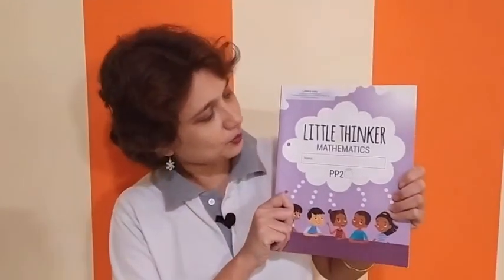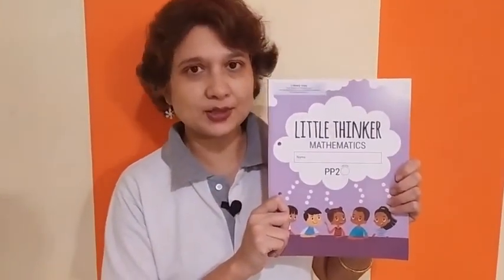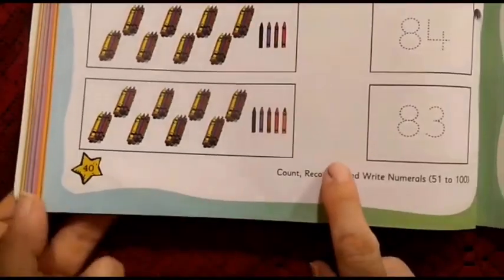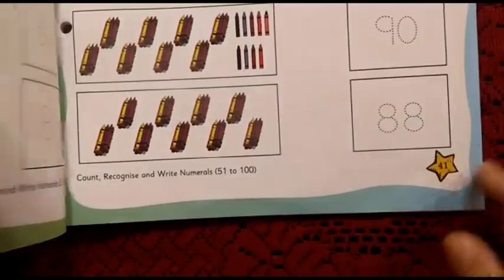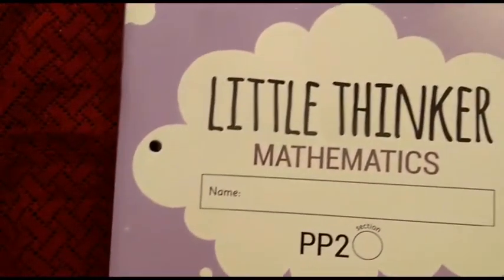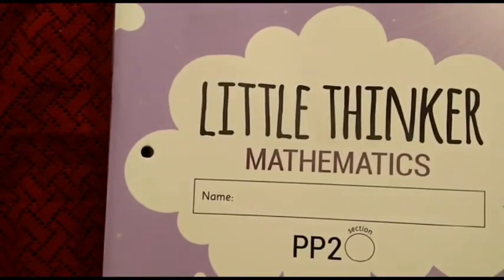This is video 2. In this video, we are going to do 2 pages from the book Little Thinker Mathematics. Let's do page number 40 and 41 from the book Little Thinker Mathematics. Let's begin.